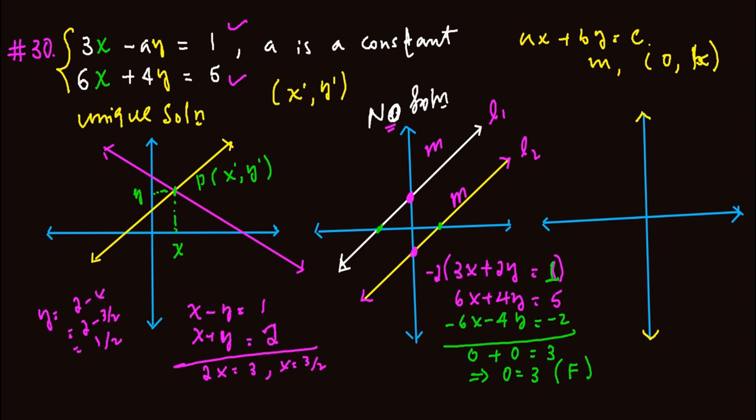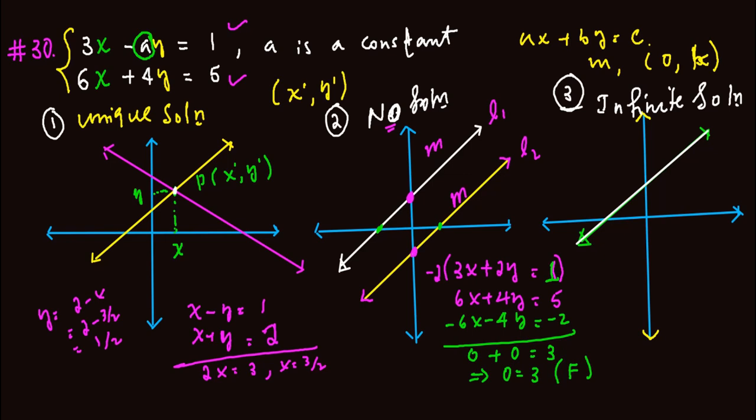When the two lines are identical, there are infinitely many solutions — every point on the line is a common point. In general, to answer this question, you need this perspective: what value of A makes the equation have no solution, a unique solution, or infinitely many solutions? Let's multiply the first equation by minus 2 and keep the second equation as is.